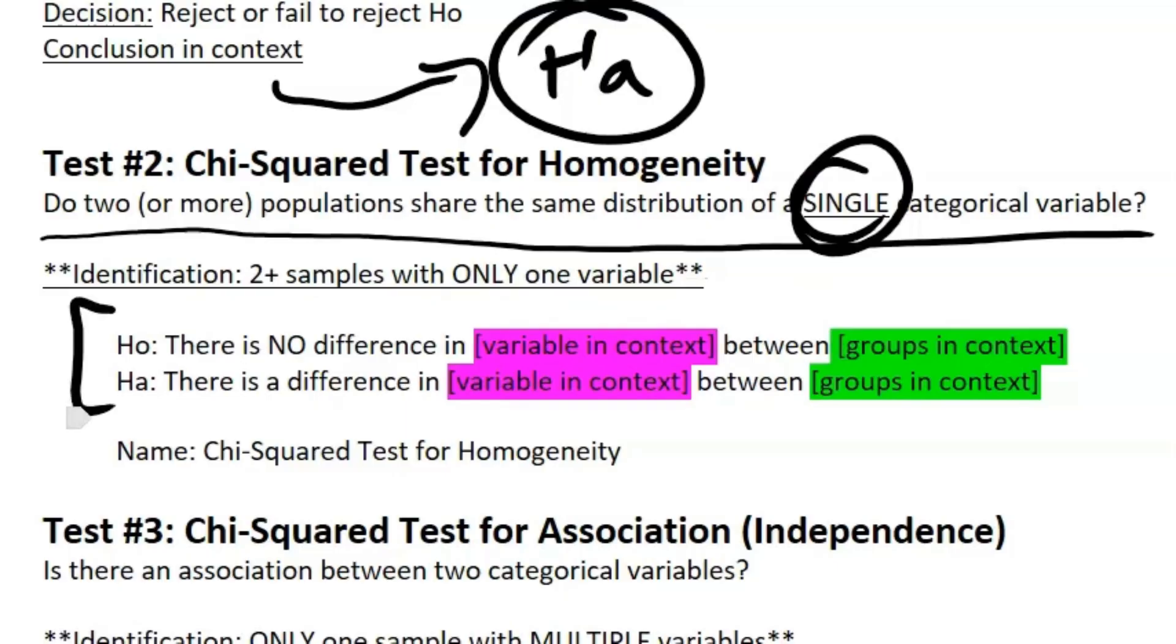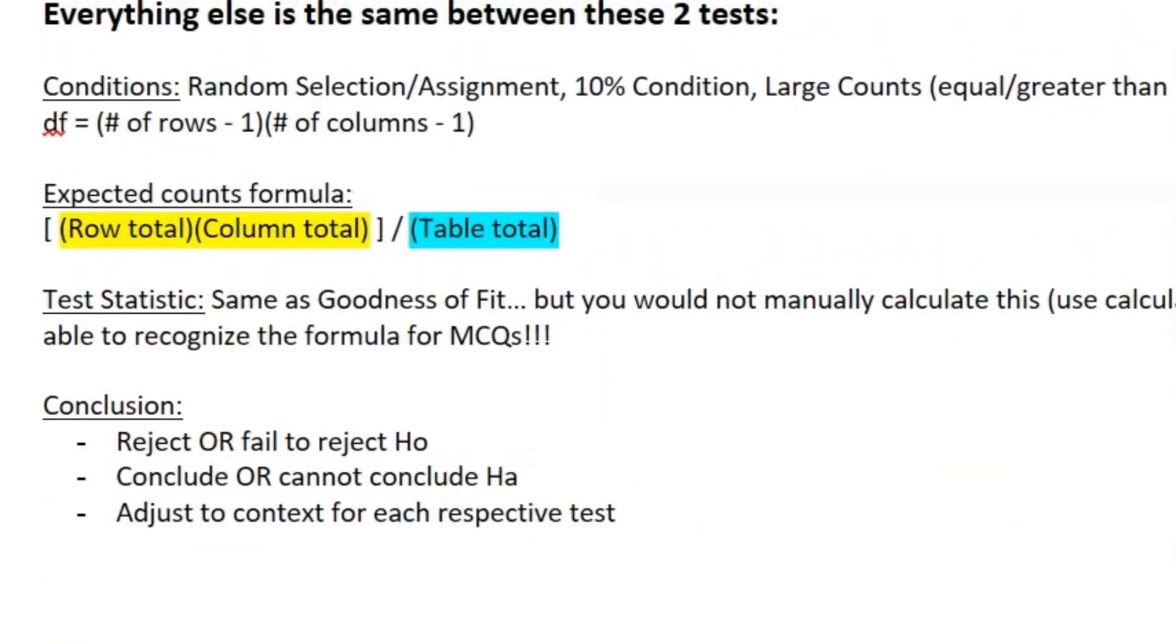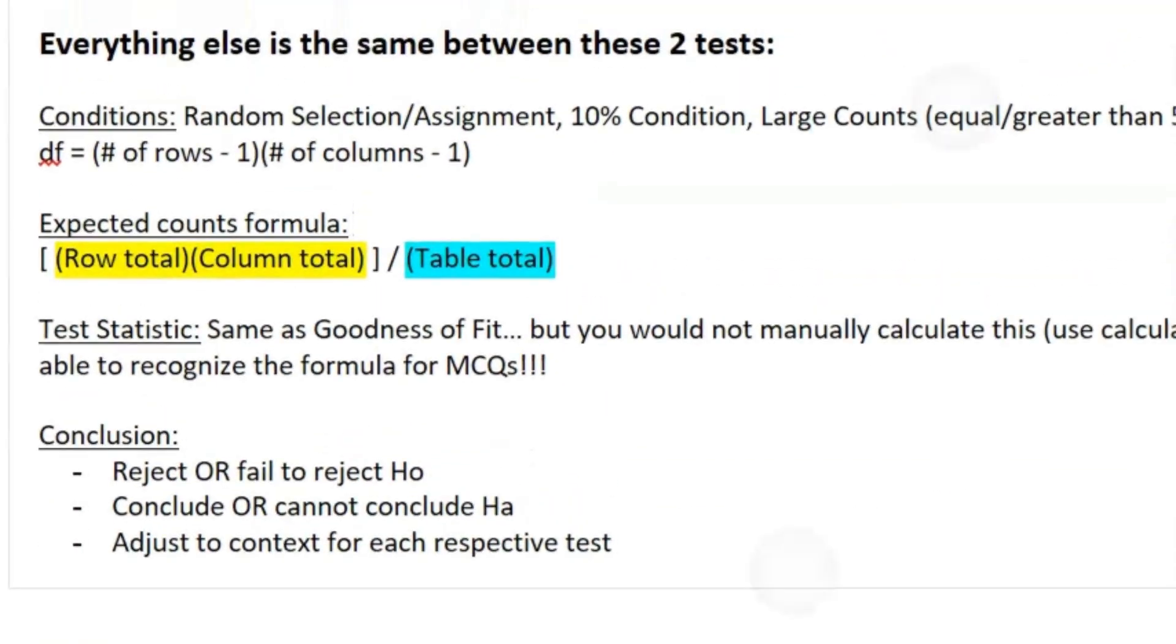For your hypotheses, your null is going to be there is no difference within that one variable between your two or more groups. Your alternative is there is a difference in that one variable between all your groups. The name is chi-squared test for homogeneity.